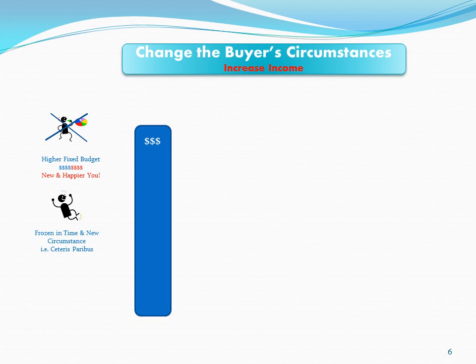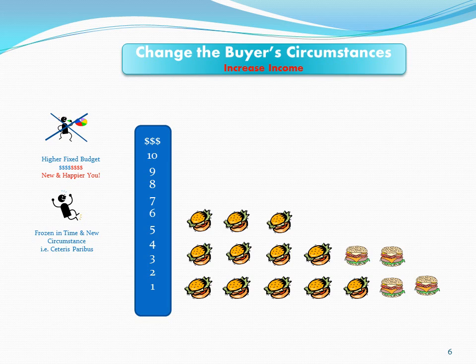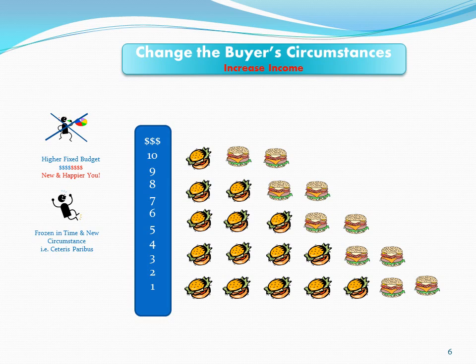Obviously, this consumer also has a fixed budget at any given point in time — it just happens to be a bigger budget. So this consumer is still going to be subject to the law of demand. They may buy more hamburgers because they have more income, but if I keep raising the price, they will eventually begin to reduce their purchases. The consumer wants more at every given price, but it's still subject to the law of demand.